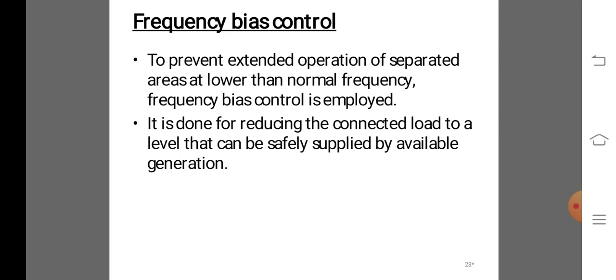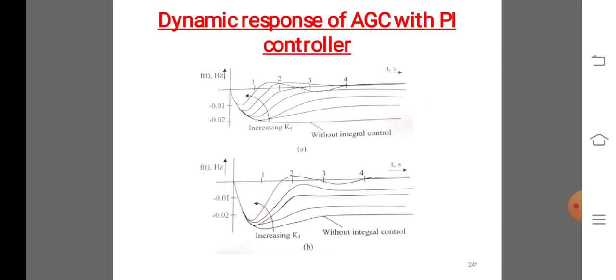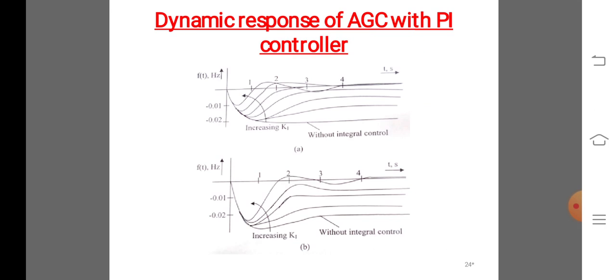If a frequency controller is placed at B, the frequency will be restored to its normal value, reducing the change in generation in A to zero. This is the dynamic response of AGC with PI controller. While the initial governor response is the same as for the previous case, the action of the controller in B will force the generation in area B to absorb the load increment in area A.